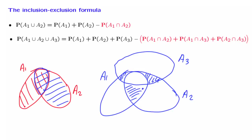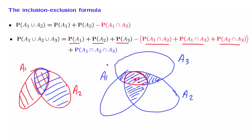But actually, the intersections also involve the triple overlap. A typical element that belongs to all three sets will show up once in each of the three individual probabilities and in all of the pairwise intersections — three times with a plus sign and three times with a minus sign — meaning these elements will not be counted at all. In order to count them, we need to add one more term: the probability of the three-way intersection.